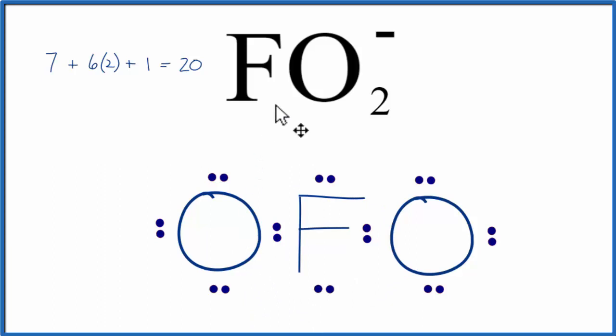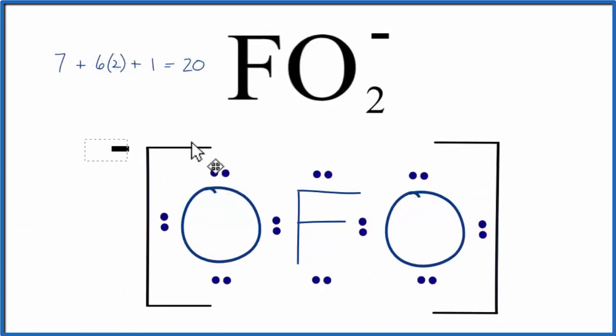That makes this the Lewis structure for FO2-, the fluorite ion. There is one last thing we should do, and that's add brackets around it to show that it's an ion. And we put the negative sign outside the brackets there, and we're done.